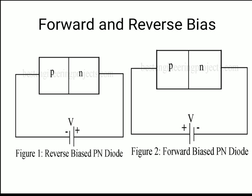There are two types of bias. In forward bias, the positive terminal of the battery is connected to the p-type semiconductor and the negative terminal is connected to the n-type semiconductor. In reverse bias, the connection is reversed — the p-type is connected to the negative terminal and the n-type is connected to the positive terminal.